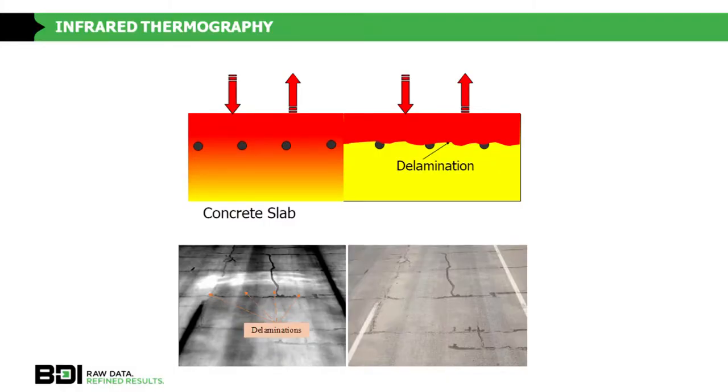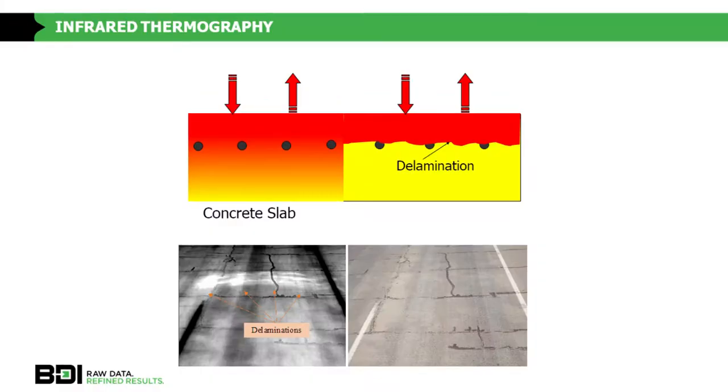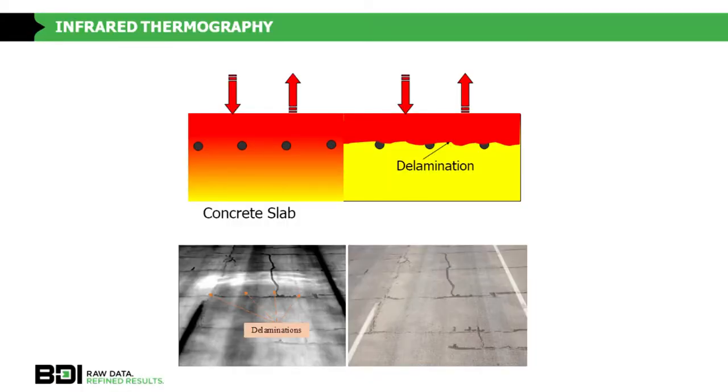Infrared thermography: if we have an intact structure, it will absorb the thermal energy put forth by the sun. If not, we get reflections from that thermal energy, which we can detect fairly easily to identify areas of deterioration versus video. One advantage of taking HRV and infrared simultaneously is that they are geospatially co-located. For instance, if you have a puddle, you can confirm an area of delamination rather than misidentifying it as paint or oil from a passing vehicle.